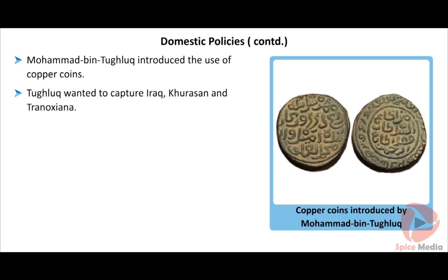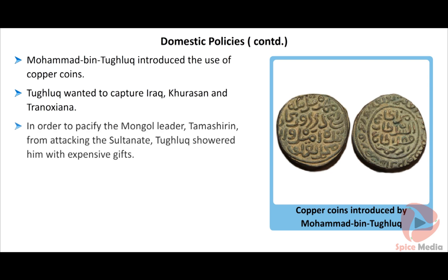Tughlaq wanted to capture Iraq, Kurasan and Tranoxiana, so he trained 3,70,000 men to form an army. When he understood the impossibility of this action, he disbanded the army. In order to pacify the Mongol leader Tamashirin from attacking the Sultanate, Tughlaq showered him with expensive gifts. This cost the administration heavily.